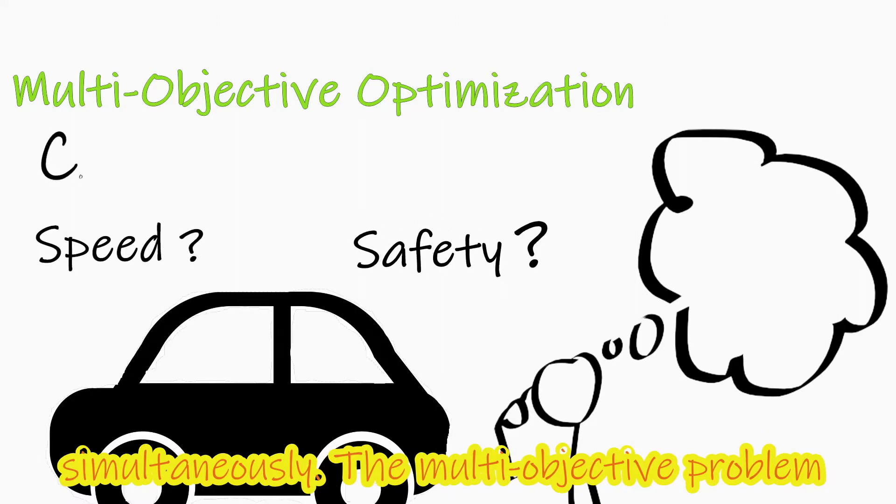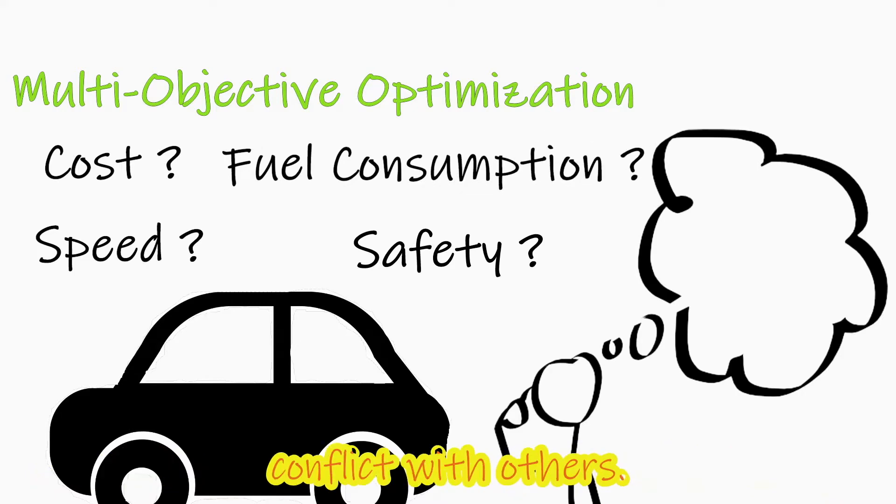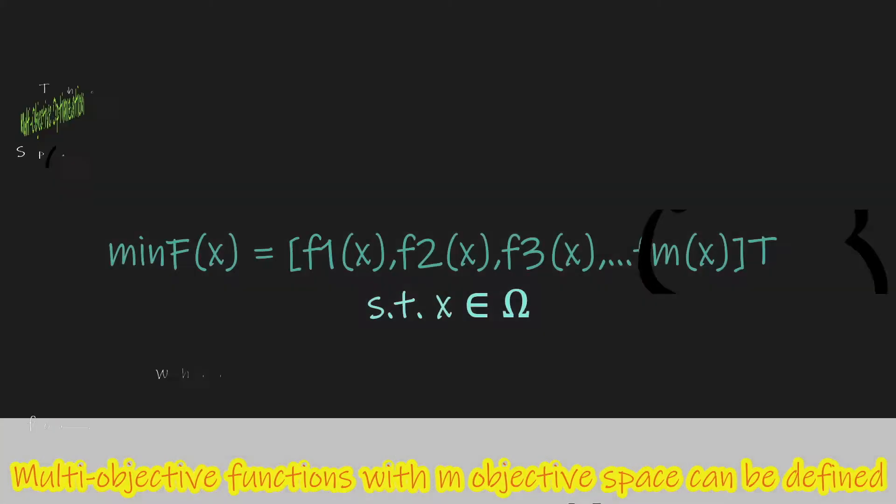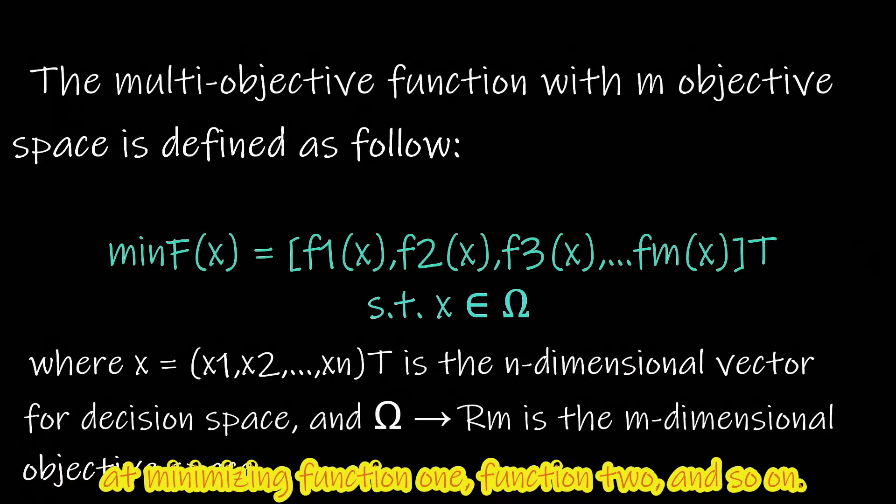The multi-objective problem consists of two or more objectives that may conflict with others. Multi-objective functions with M-objective space can be defined mathematically. Generally, the function can state as minimizing function 1, function 2, and so on.